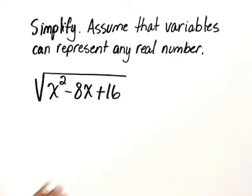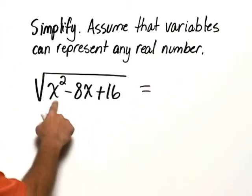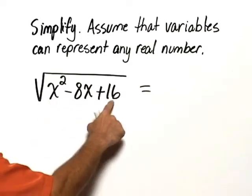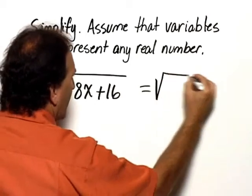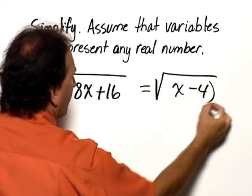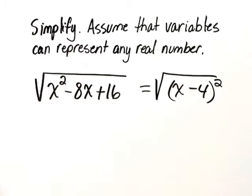The first thing to recognize is that x squared minus 8x plus 16 can be rewritten as x minus 4 quantity squared. And so we have the square root of x minus 4 quantity squared.